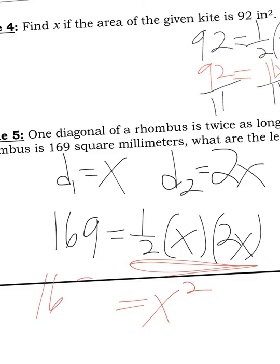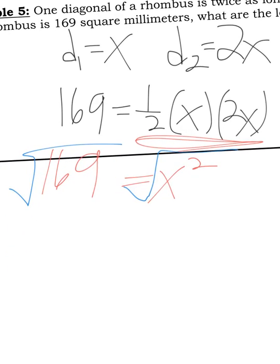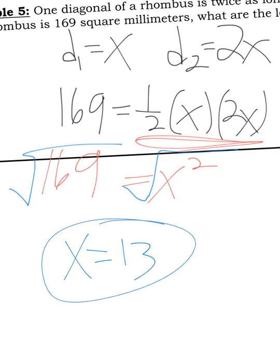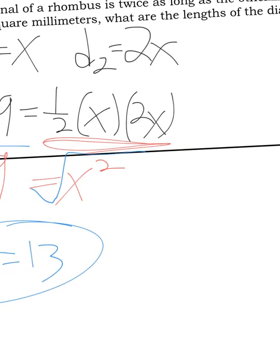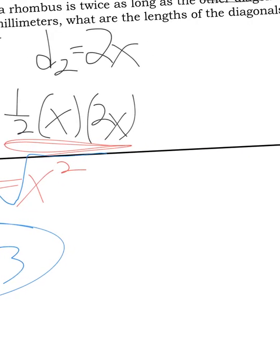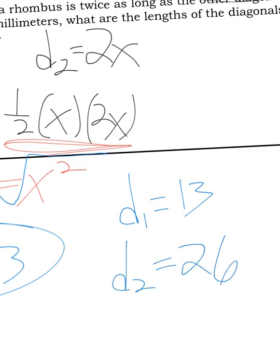So 169 equals X squared. Get rid of any square by square rooting, and you get 13. So X equals 13. The question was asking what are the lengths of your diagonals? Well, diagonal one would just be X, so diagonal one is 13. And diagonal two is twice as long, so 2 times 13 is 26. That is it.